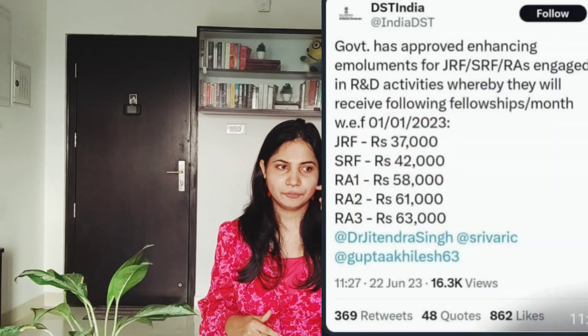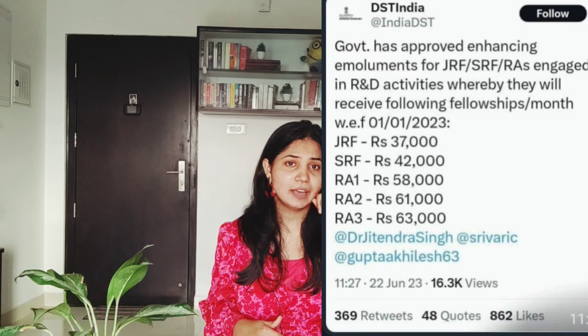PhD students can generally manage to pay their own fees. According to DST, the PhD stipend has now increased to 37,000 for JRF and 42,000 for SRF, which is an ample amount to cover fees. When I was a PhD student I was getting 35,000 as SRF and 33,000 as JRF, so now 37,000 and 42,000 is what they're paying.